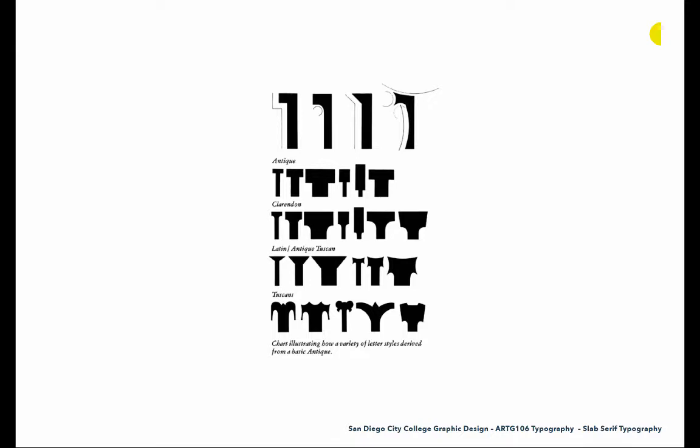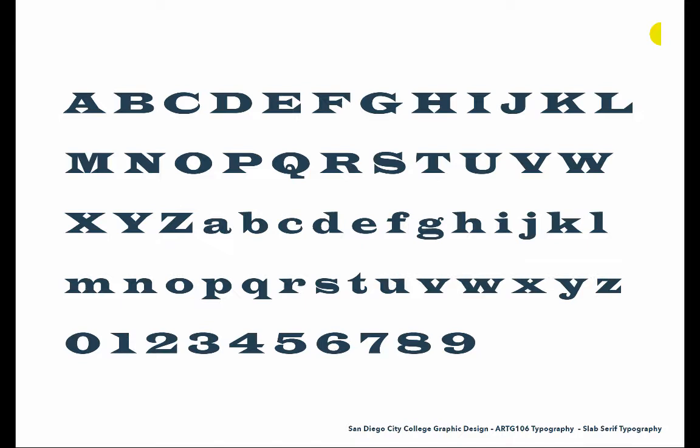We'll also look at this diagram that shows all of the variations — all of the different kinds of slab serifs that exist. This was done by Rob Roy Kelly, a type historian who ran another very notable wood type archive in Austin. Here we look at the antiques — those traditional unbracketed slab serifs — then we have the Clarendons where you can see that addition of bracketing, then the Latins where there's a wedge-like serif, and then the Tuscans, which are much more decorative. These are the subcategories that exist within this genre.